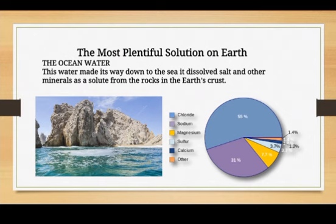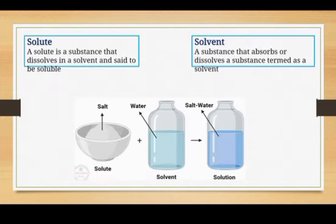A solution is made by adding solute and solvent. In a diagram you can see a bowl containing salt and a container of water. After adding the two together you can make a salt water solution.